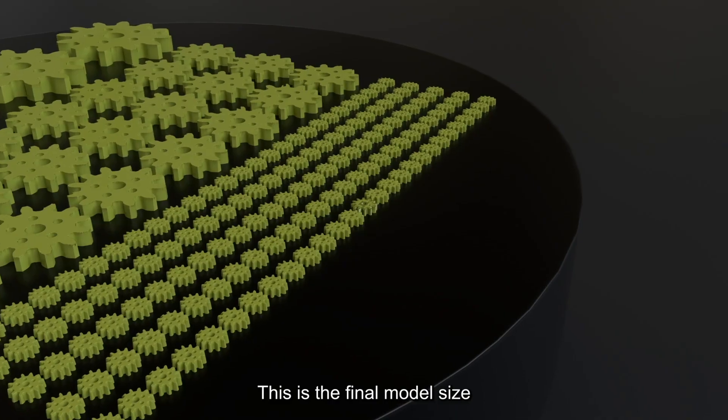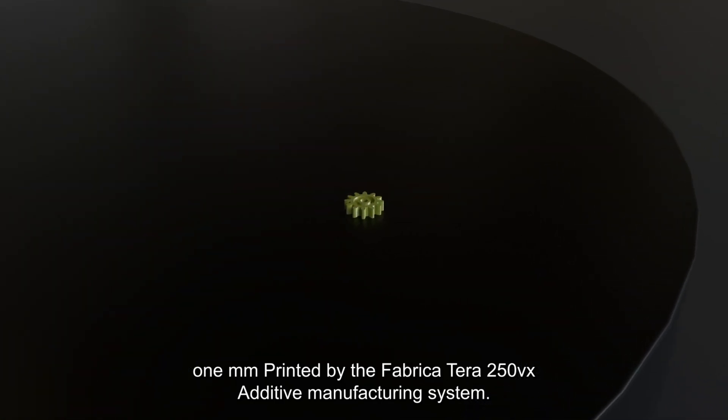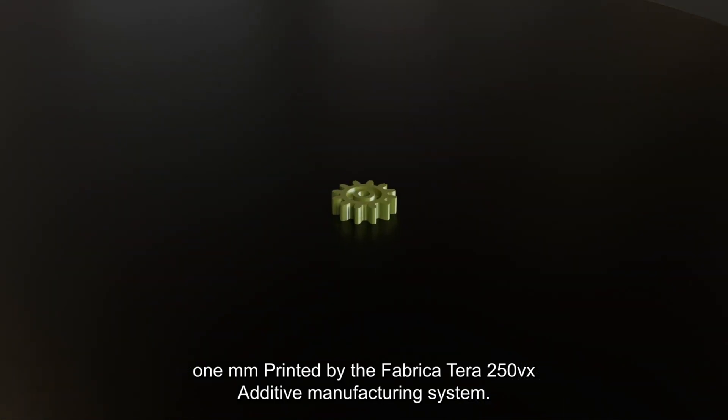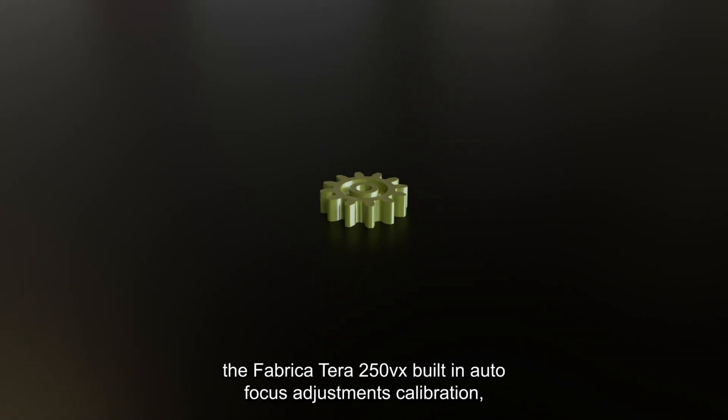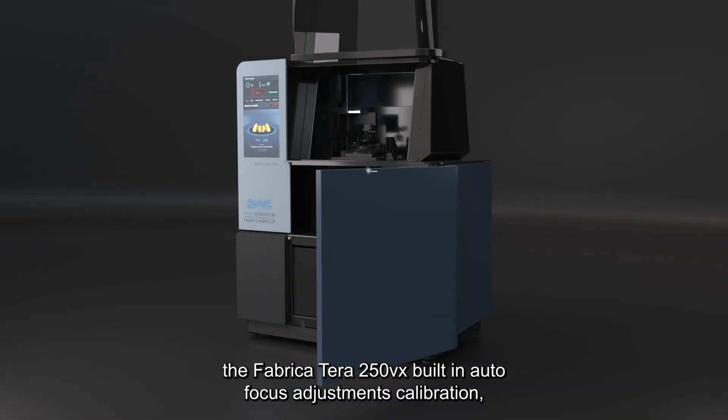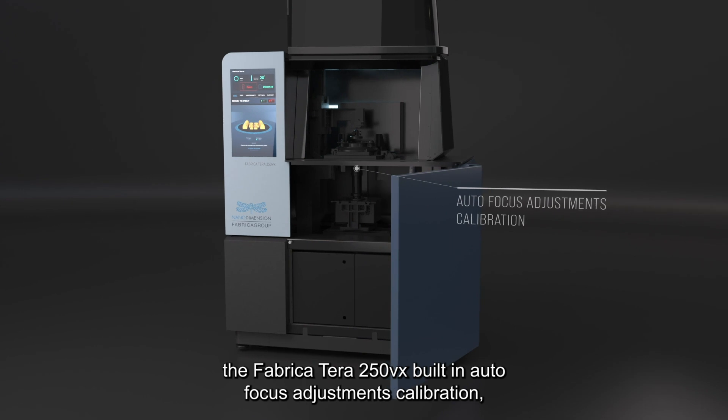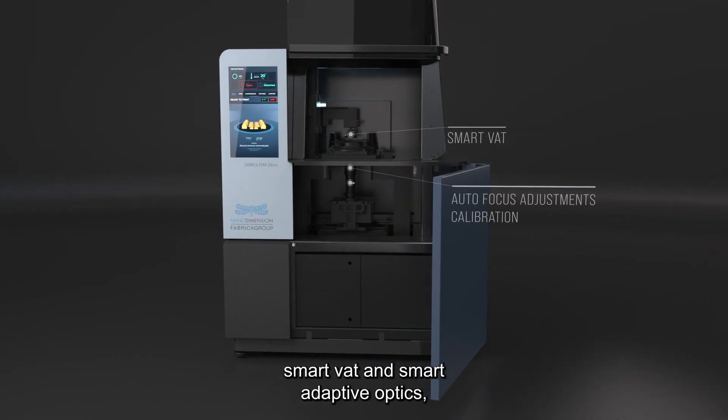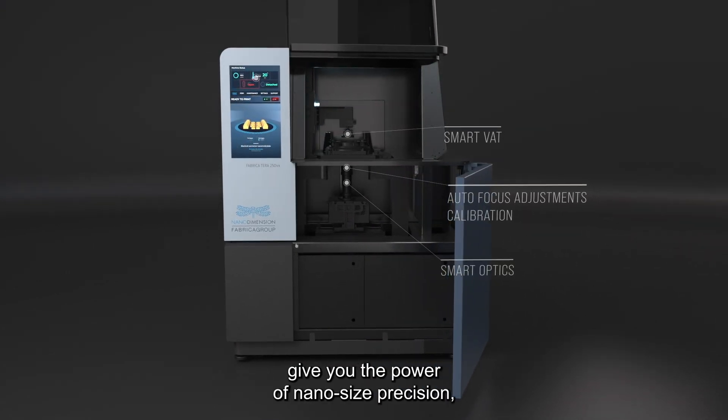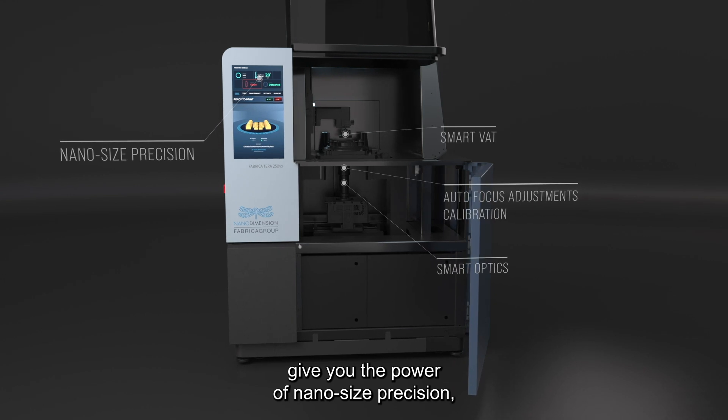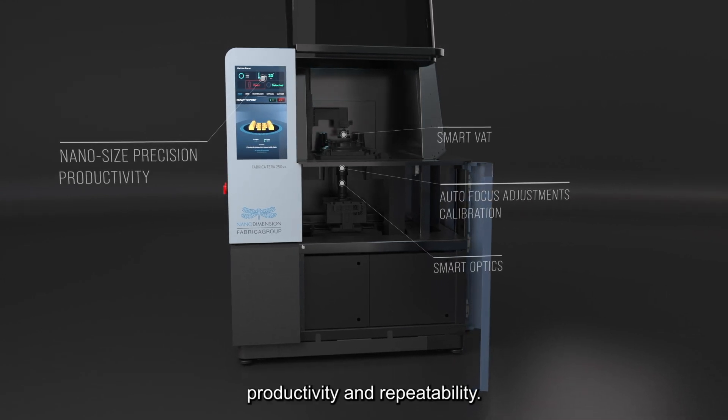This is the final model size, 1 mm printed by the Fabrica Terra 250 VX additive manufacturing system. The Fabrica Terra 250 VX built-in autofocus adjustments, calibration, smart vat, and smart adaptive optics give you the power of nano size precision, productivity, and repeatability.